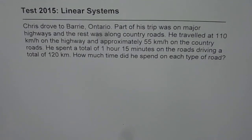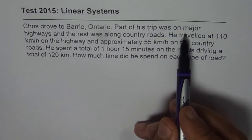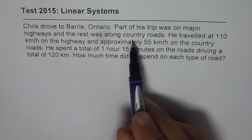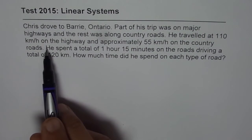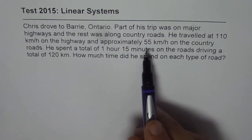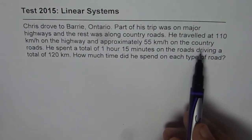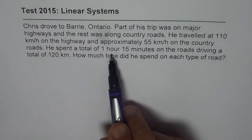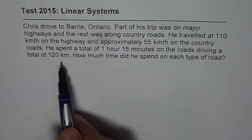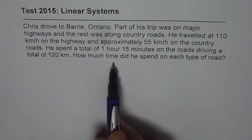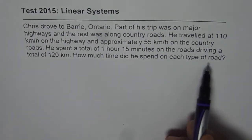I'm Anil Kumar, and here's a word problem relating time, distance, and speed. Chris drove to Barrie, Ontario. Part of his trip was on major highways and the rest was along country roads. He travelled at 110 km per hour on the highway and approximately 55 km per hour on the country roads. He spent a total of 1 hour 15 minutes on the roads, driving a total of 120 km. How much time did he spend on each type of road?